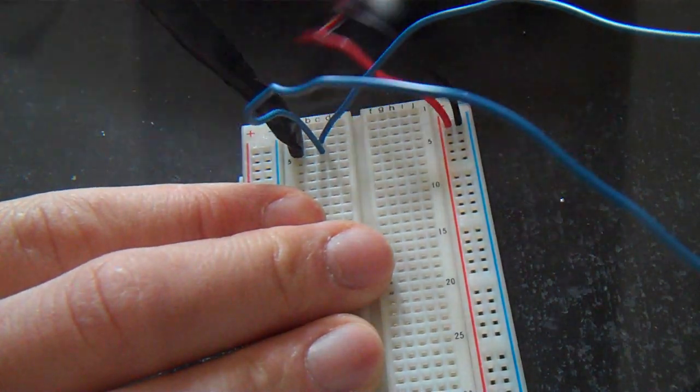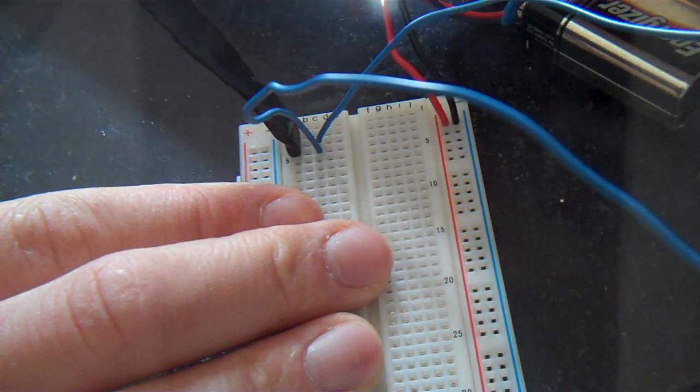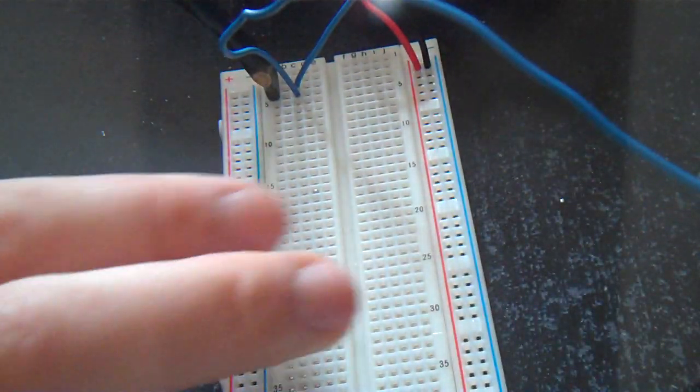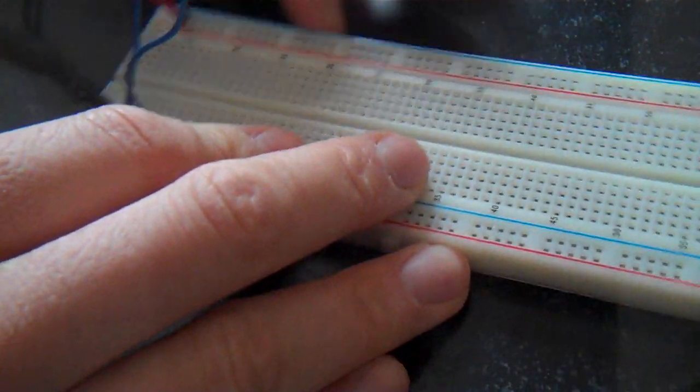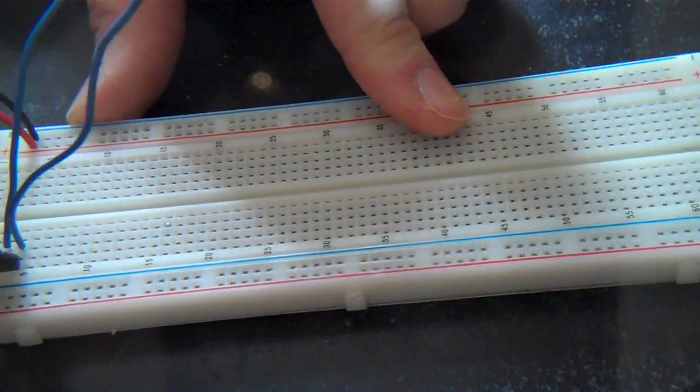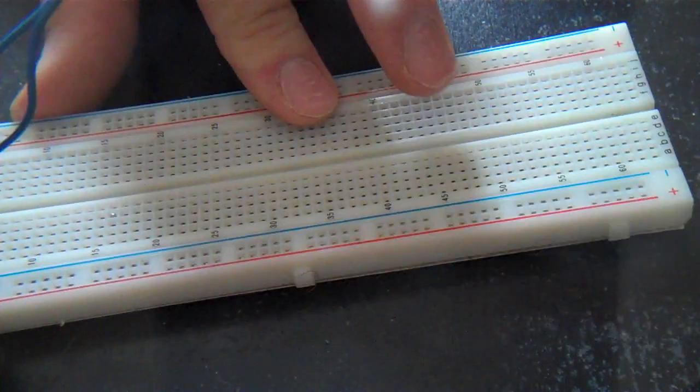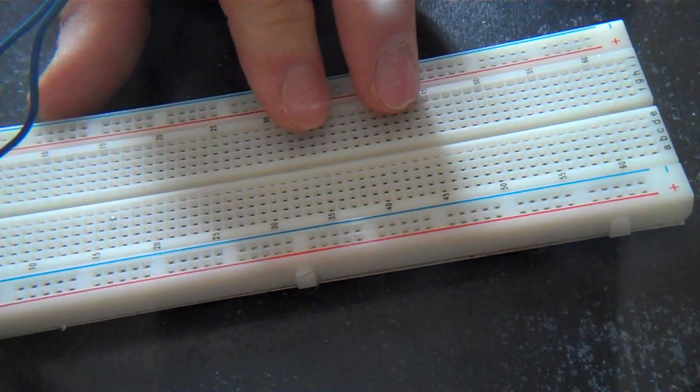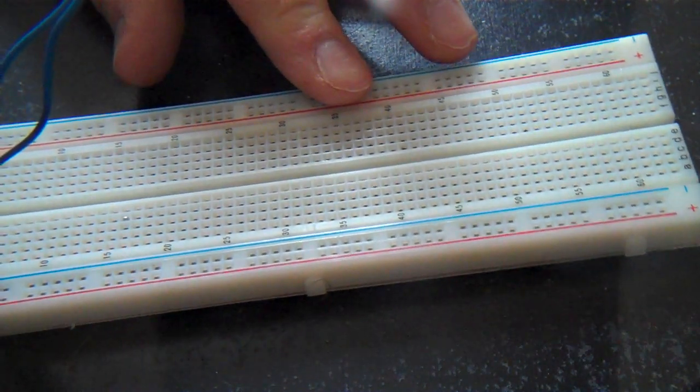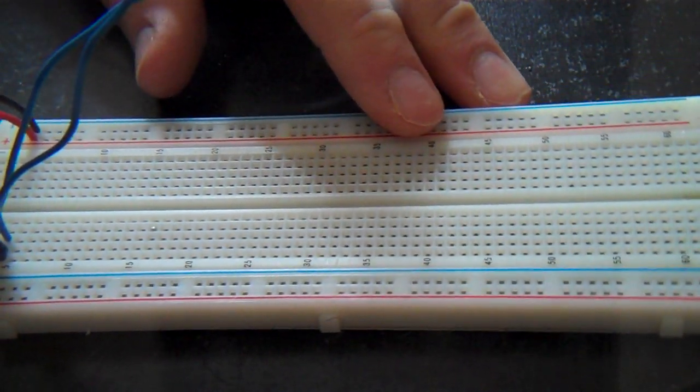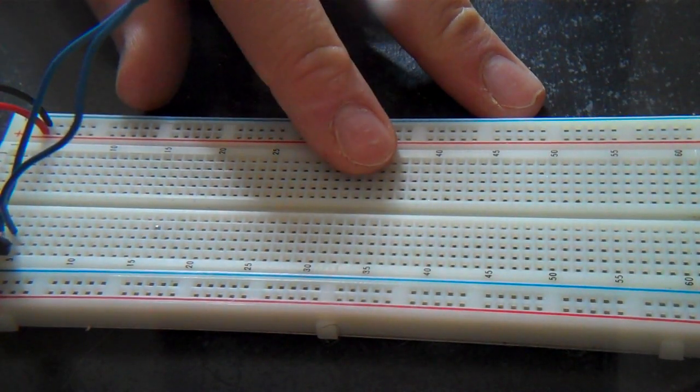And then also connected to the breadboard, I have just a 9 volt battery connected to the positive and the negative. So what I'm going to do is just kind of hook everything up. Hopefully you guys can get a pretty good picture of this and won't have any more trouble.